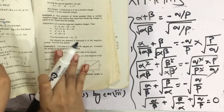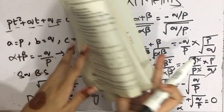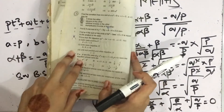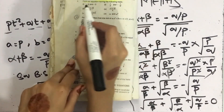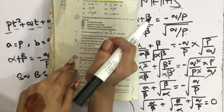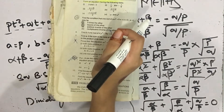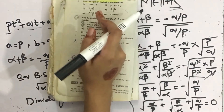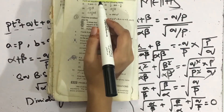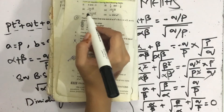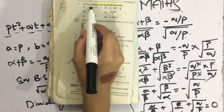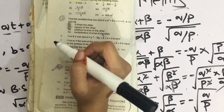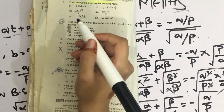Let's move on to the next question. In question 4, we are asked to form a quadratic equation given the following roots. When you are given the roots, it means those roots are alpha and beta. You are given the first root alpha and the second root beta, and from those we form the equation.